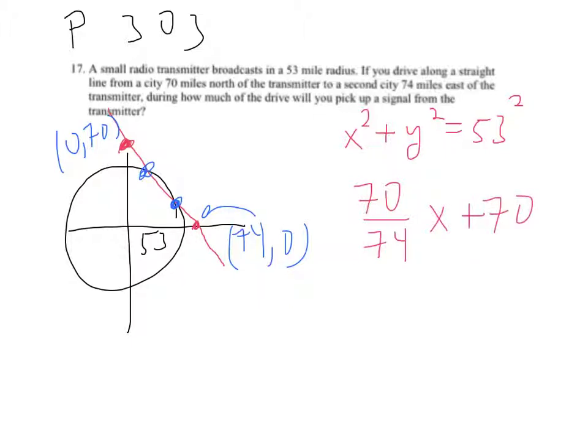That's equal to y, so then I can put that into this equation. So x² plus (-70/74x + 70)² has to be equal to 53². We can certainly solve this a lot of different ways.